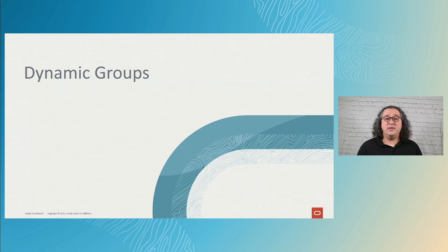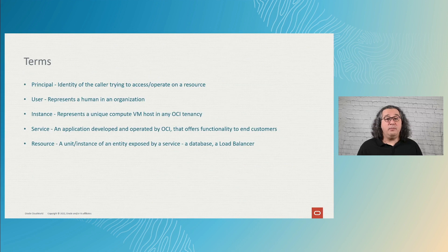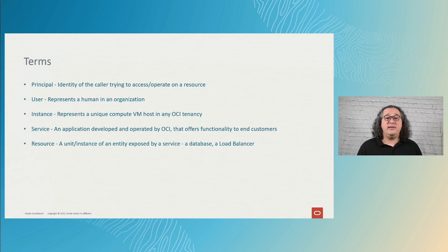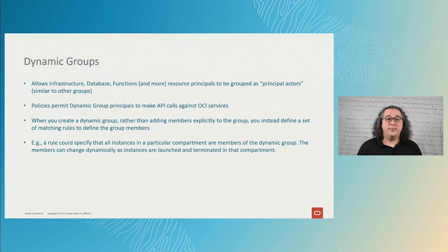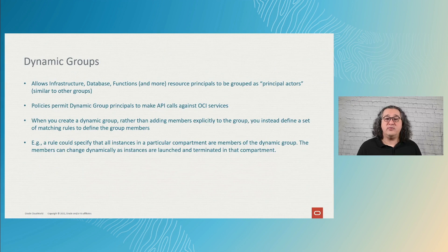When I talked about authentication and principals, I briefly mentioned resource principals. Dynamic groups and resource principals are directly connected. A principal is a caller trying to act on a resource — once that caller authenticates, it becomes a principal. Principals are divided into user principals and resource principals. Within resource principals, we have instances representing compute instances in the tenancy, services representing applications operated by OCI like the function service, and resources like a database instance or a load balancer.